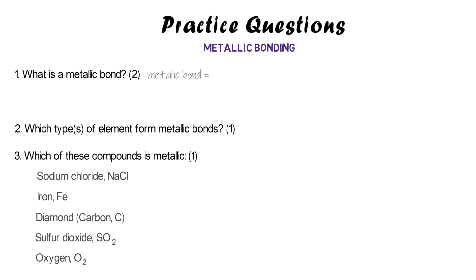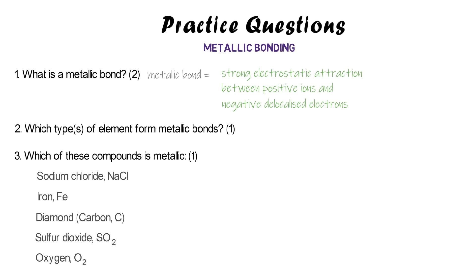The definition of a metallic bond is that strong electrostatic attraction — that gets you the first mark. This time it is between the positive ions and the negative delocalized electrons, which is how it's slightly different to ionic bonding. Instead of between positive and negative ions, it's between positive ions and negative electrons.